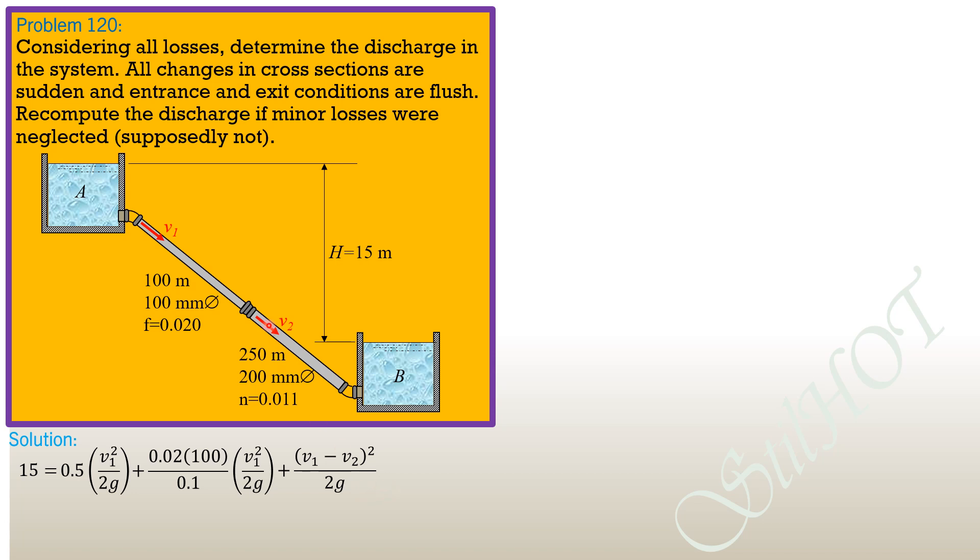Then plus head loss due to pipe friction in this pipe by Manning's formula, 6.35 N square, so 0.011 square, length 250, velocity square over diameter to the 4 thirds. So velocity is V2 square over diameter 0.2 to the 4 thirds.